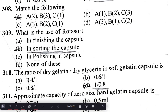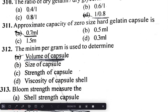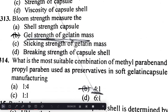Roto-salt is used for salting the capsules. The ratio of dry gelatin to dry glycerin in a soft gelatin capsule is 1 to 0.8. The approximate capacity of a size zero hard gelatin capsule is 0.7 mL. Bloom strength measures the gel strength of the gelatin mass.